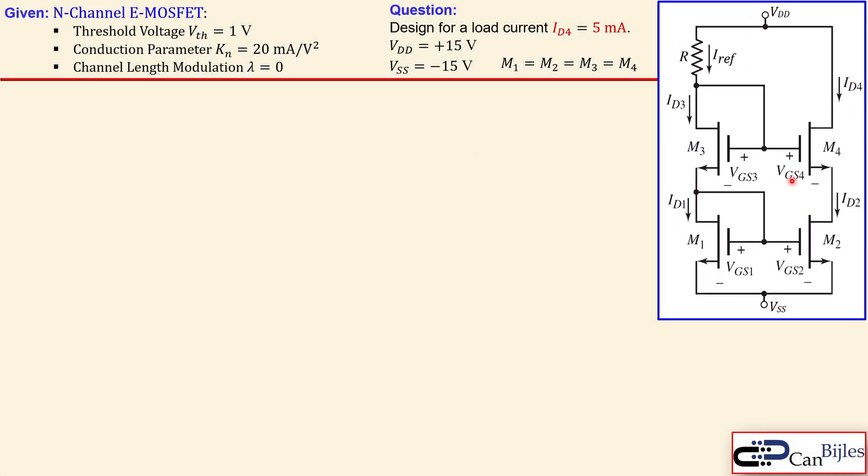The circuit we have given is here. This is the simple current mirror configuration with M1 and M2, and on top of that, the same configuration using M3 and M4. So this is now the cascoded configurations on top of each other. The resistor R is there to create that reference current. We have two DC voltage sources, VDD and VSS. The values are shown here and all the MOSFETs M1 up to M4 are matched, with threshold voltage, conduction parameter, and channel length modulation as shown here.